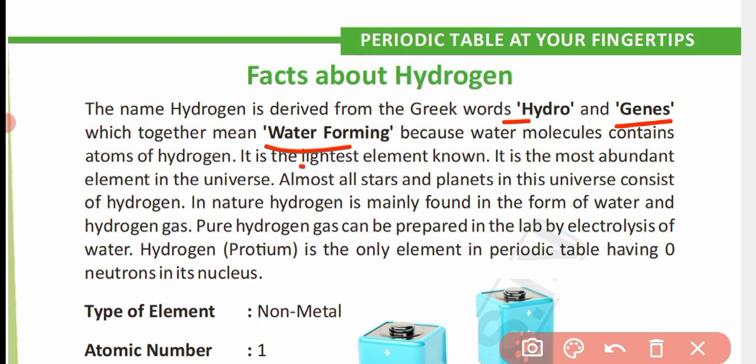It is the lightest element known and the most abundant element in the universe. Almost all stars and planets in the universe consist of hydrogen. In nature, hydrogen is mainly found in the form of water and hydrogen gas. Pure hydrogen gas can be prepared in the lab by electrolysis of water. Hydrogen is the only element in the periodic table having 0 neutrons in its nucleus.